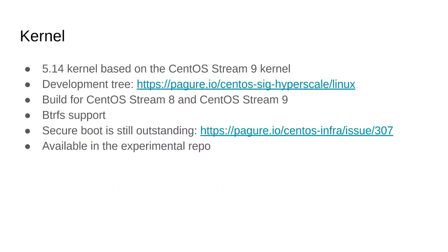On the kernel front, we maintain a 5.14 kernel based on CentOS Stream 9 for both CentOS 9 and 8, so we have a backport of the Stream 9 kernel onto CentOS 8. This is the stock Stream 9 kernel with a few minor modifications — the main thing is that we enable Btrfs support and backported a number of fixes for Btrfs itself, and also simple DRM. The idea is that if you boot with this kernel, you can install your system on Btrfs and use Btrfs on CentOS Stream 9 out of the box. There is one catch: this does not have Secure Boot support — you can read the CentOS infra issue for the full story, and it's too long to cover in this talk.